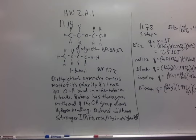Diethyl ether has a boiling point that's low, 34.5 degrees Celsius, while butanol has a boiling point that's fairly high, 117 degrees Celsius. We're supposed to explain why.